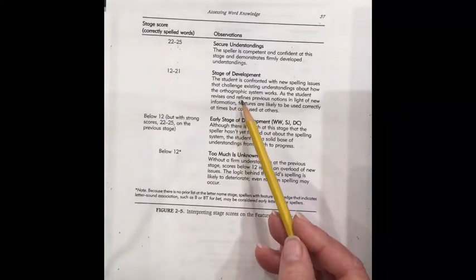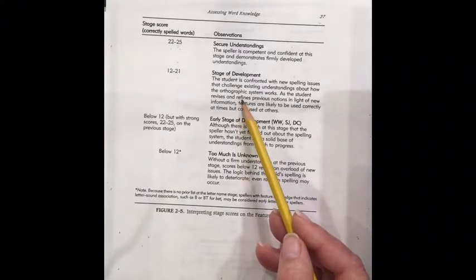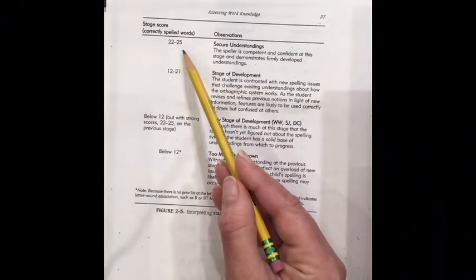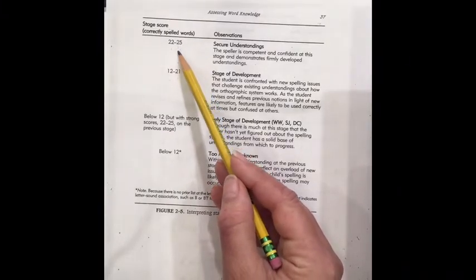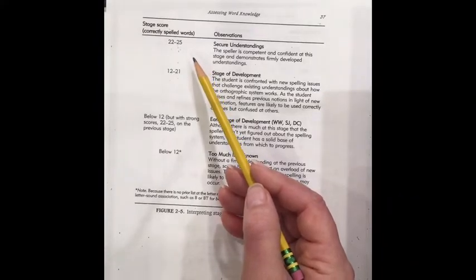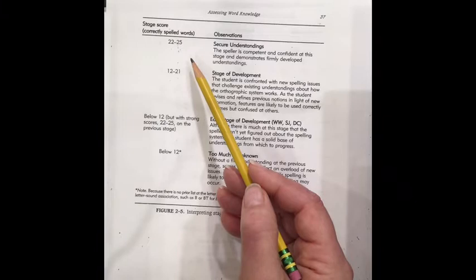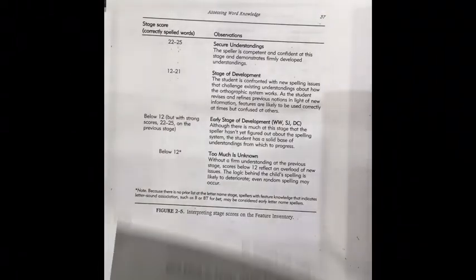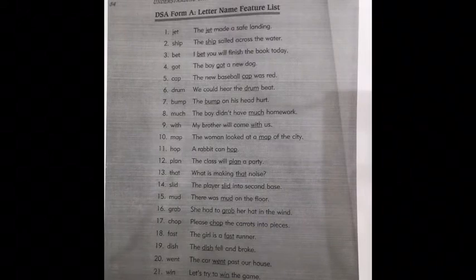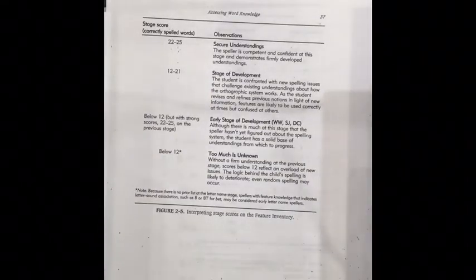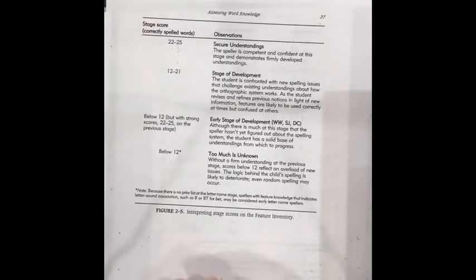We're pretty much done with this test. We'll just analyze the data that we have on the letter name stage feature test. If the child, however, scored 22 to 25, that means they're almost done with the stage that you're looking at. And so if you had a student that scored 23 on the letter name stage test, you would give them the one higher test. So you would go from the letter name stage feature test to the within word stage feature test. And in your forms, you have a feature list for letter name. That's the one we were working with. But you also have a feature list for within word, syllable juncture, and derivational constancy. So you have all of those.